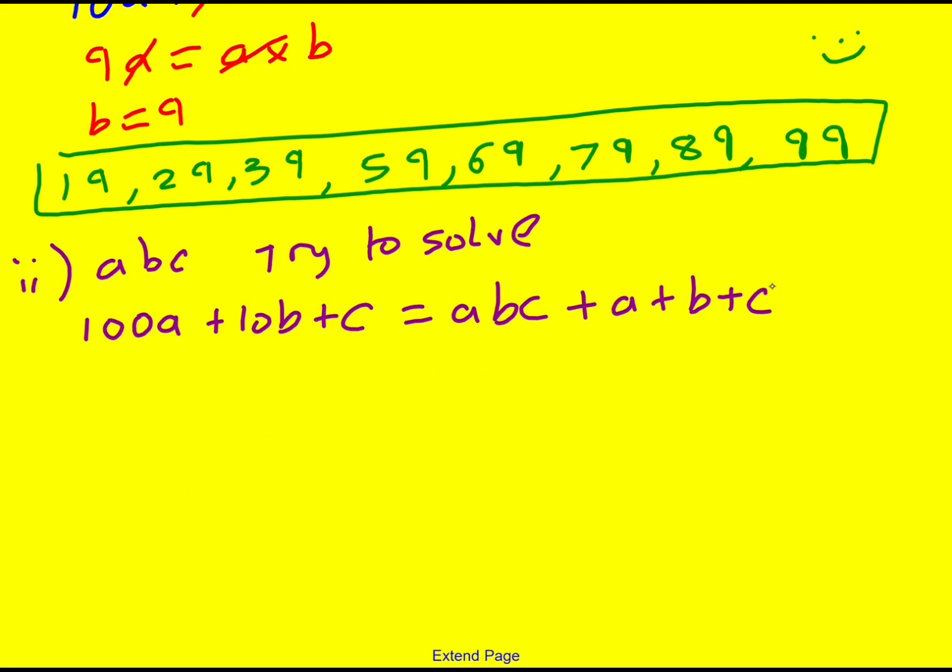Well, just like before, immediately I can cancel out the C's. And I can minus A from both sides and B from both sides. So 99A plus 9B is equal to ABC.